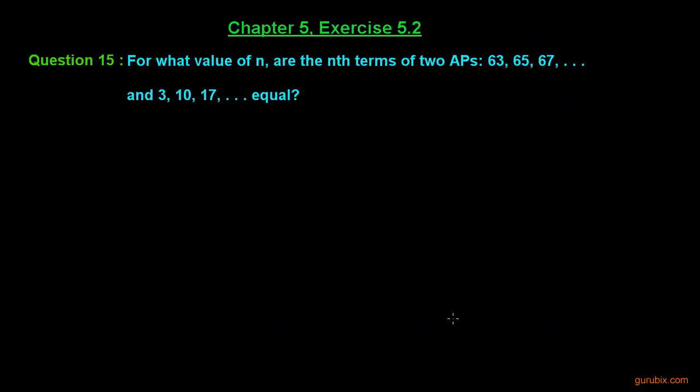Let us solve question number 15 of exercise 5.2 of Chapter 5. The question asks: for what value of n are the nth terms of two APs equal? The first AP is 63, 65, 67 and the second AP is 3, 10, 17.